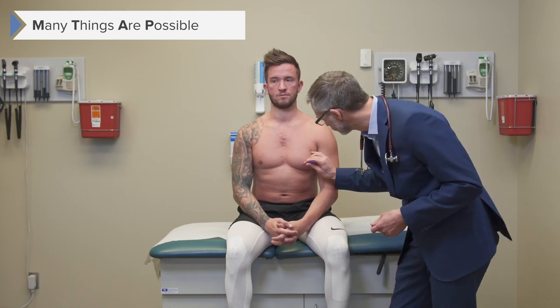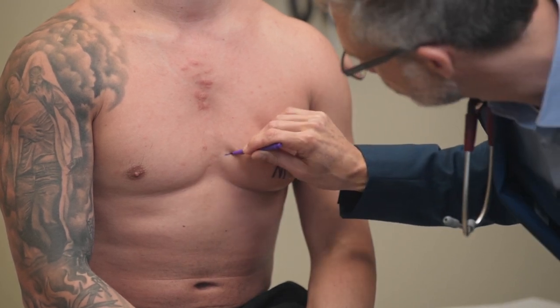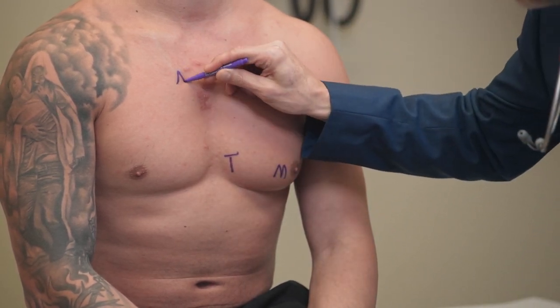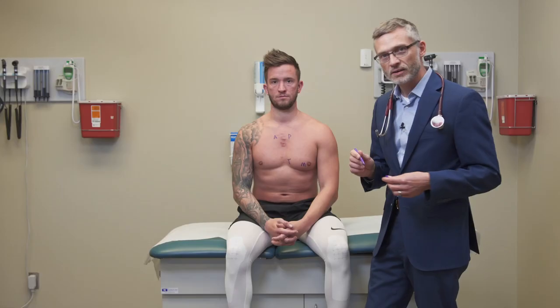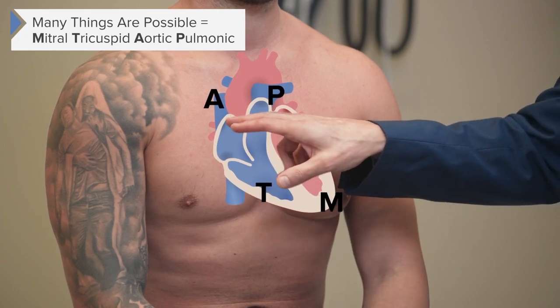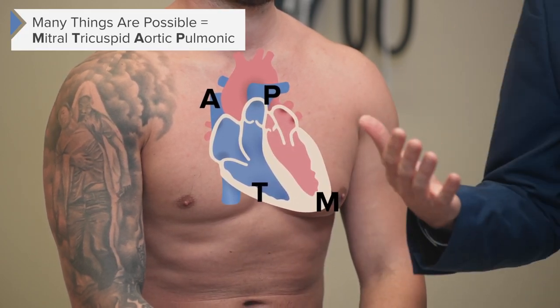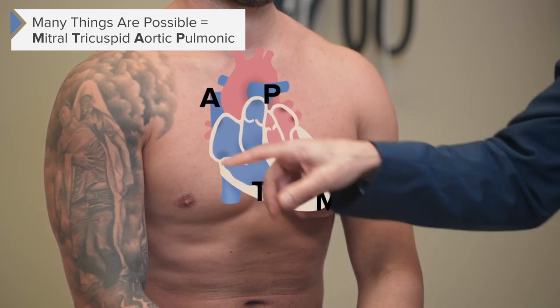When you know the cardiac exam, many things are possible. That phrase is actually an acronym — a useful way to remember the heart valves. M-T-A-P represents the sequence of closing of the four heart valves: the Mitral, the Tricuspid, the Aortic, and the Pulmonic. Using that acronym, 'many things are possible,' you'll remember the sequence in which those valves are closing.